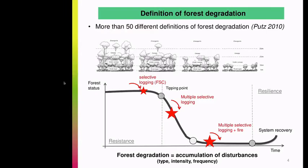There are more than 50 different definitions of forest degradation. In our case, we used Errol's definition that forest degradation is a process related to the accumulation in time and space of anthropogenic disturbances, which implies changes in the structure of the forest and does not entail a change in land use.